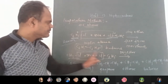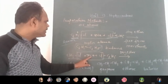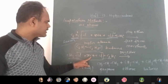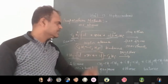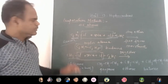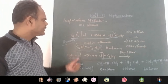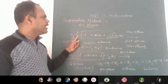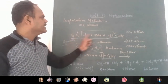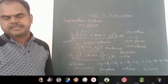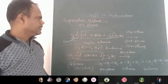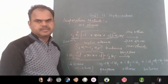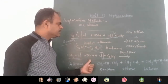Wurtz reaction is best applicable to symmetrical alkyl halides — you must take similar alkyl halide molecules, not dissimilar ones. Using symmetrical alkyl halides gives a single desired product, but using unsymmetrical alkyl halides gives an alkane mixture rather than the desired product.